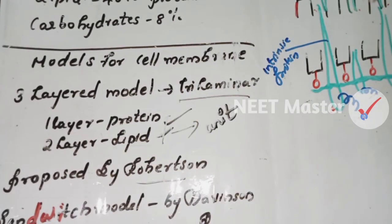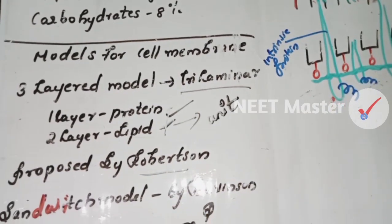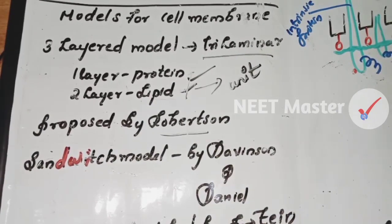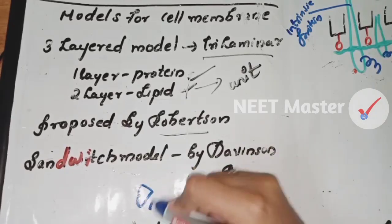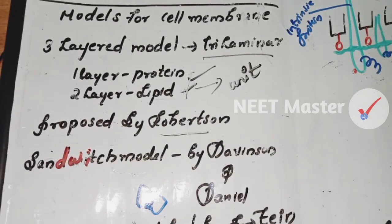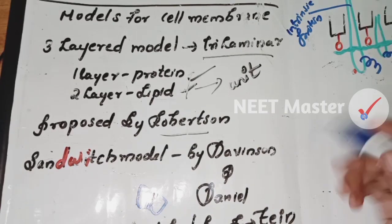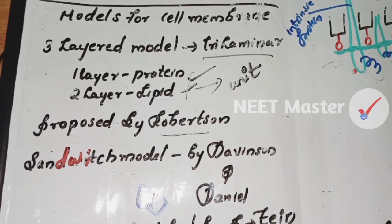The next model is the Sandwich model. It has fillings between two plates — like a sandwich. The lipid bilayer is sandwiched by protein on both sides. This model is a proposal by Davson and Danielli.